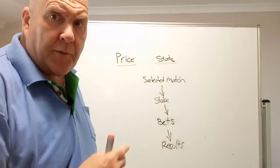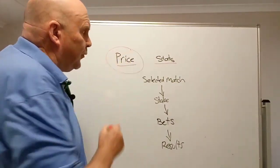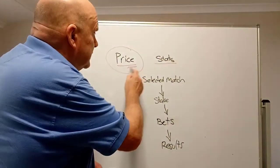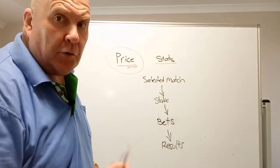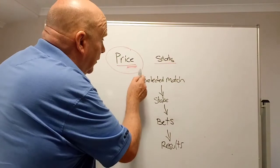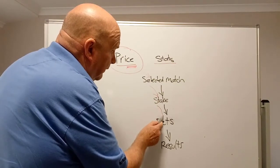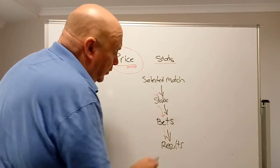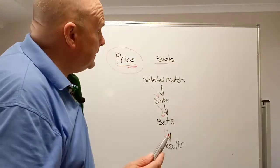So what separates SoccerStatsBot from the others? Most bots will only look at price, and that's how they make their bets — based on prices that you set, and if that's matching, then the bet will get made. You can do that with SoccerStatsBot too. It will look at the price of the selected match, work out the stake, and if it qualifies, place the bet and then record the results. That is how most bots work.